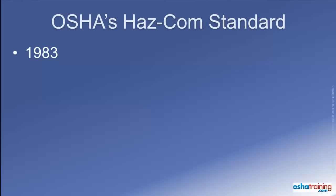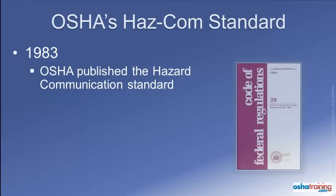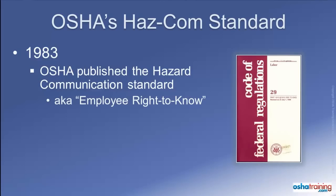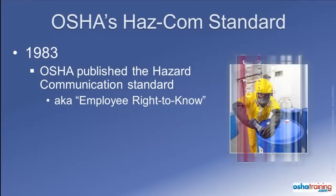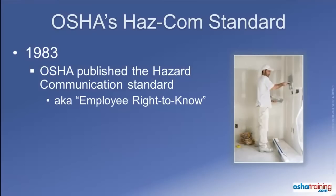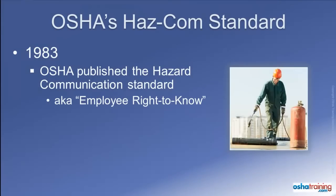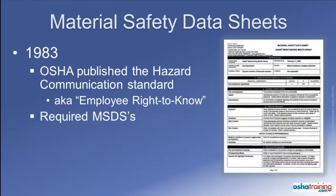In 1983, the Occupational Safety and Health Administration, or OSHA, published their hazard communication standard. This important standard was often referred to as the Employee Right to Know standard because it was developed to ensure that workers had access to information and training about the hazards of the chemicals and products they were exposed to at work. One of the major requirements of OSHA's HazCom standard was for manufacturers and distributors of hazardous products to develop and make available material safety data sheets for their products.